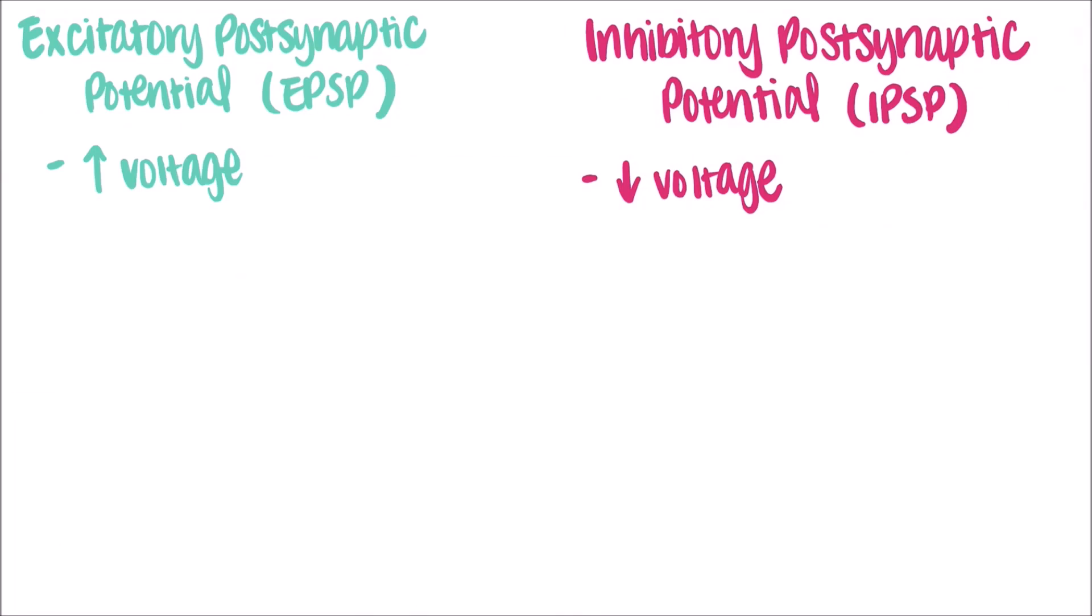Both EPSPs and IPSPs are caused by neurotransmitters that are released from the presynaptic neuron. The most common excitatory neurotransmitter is glutamate.